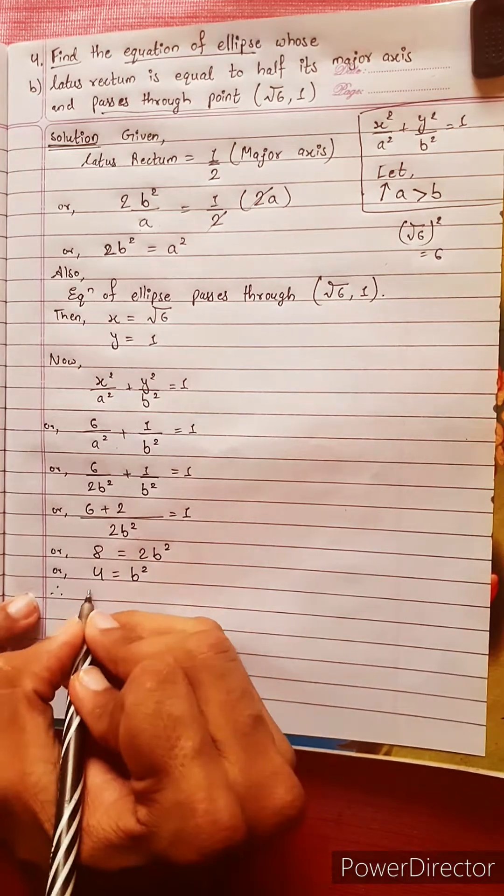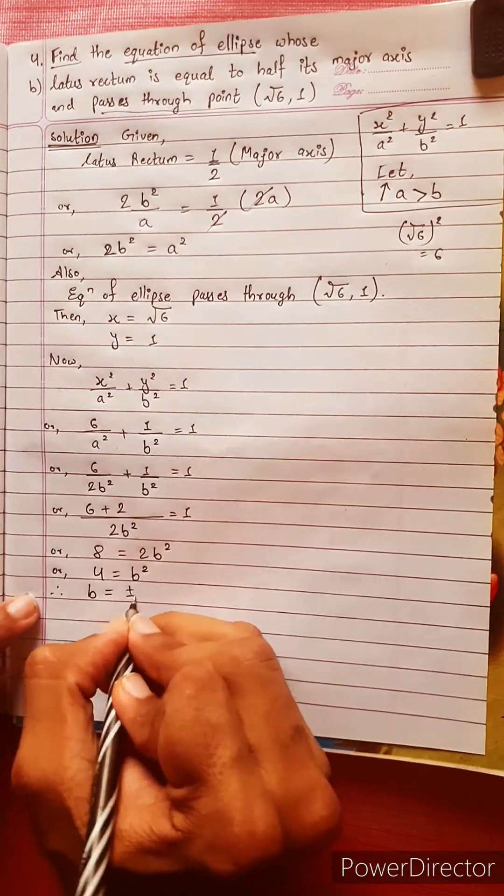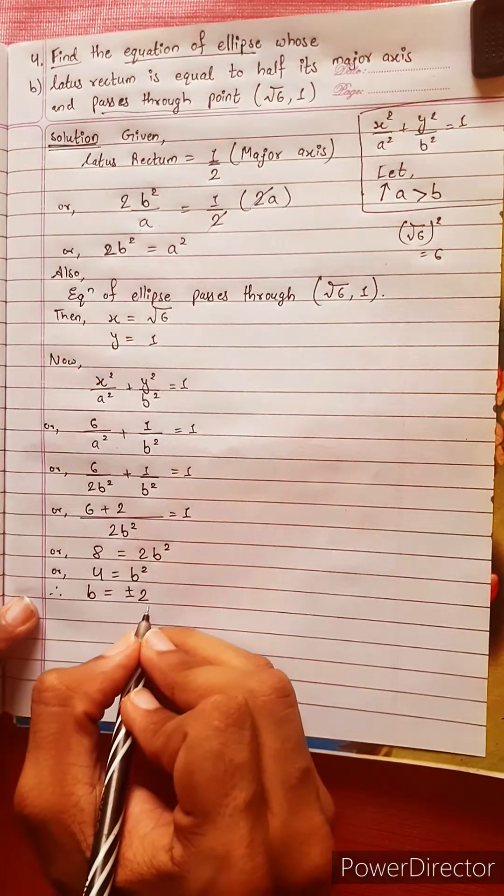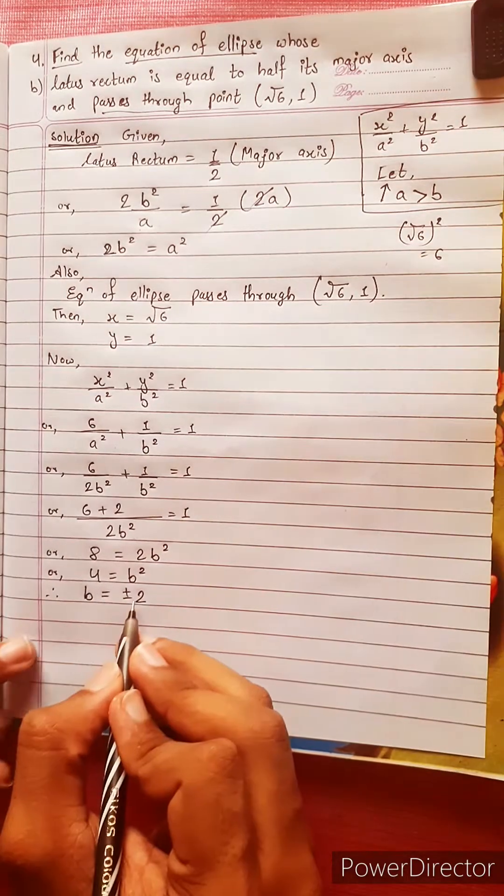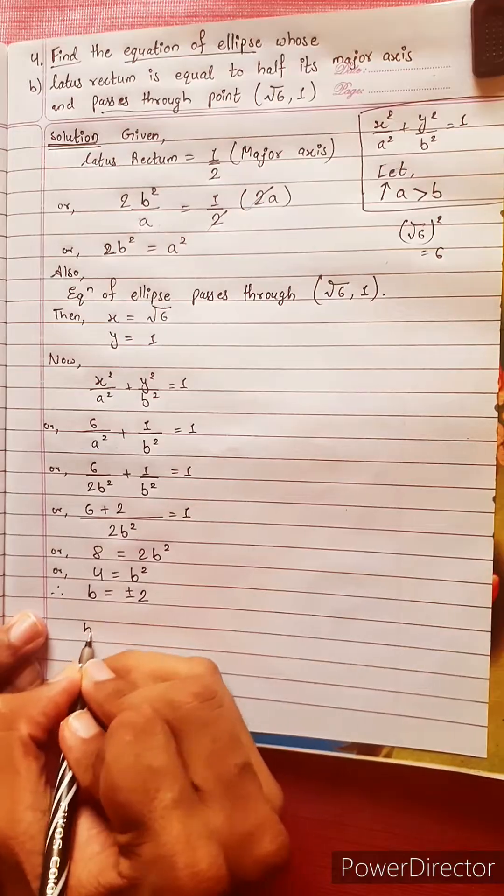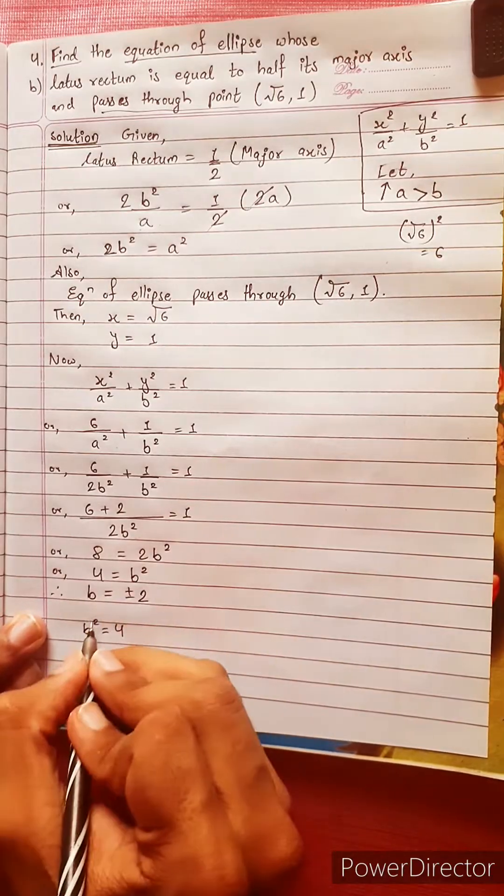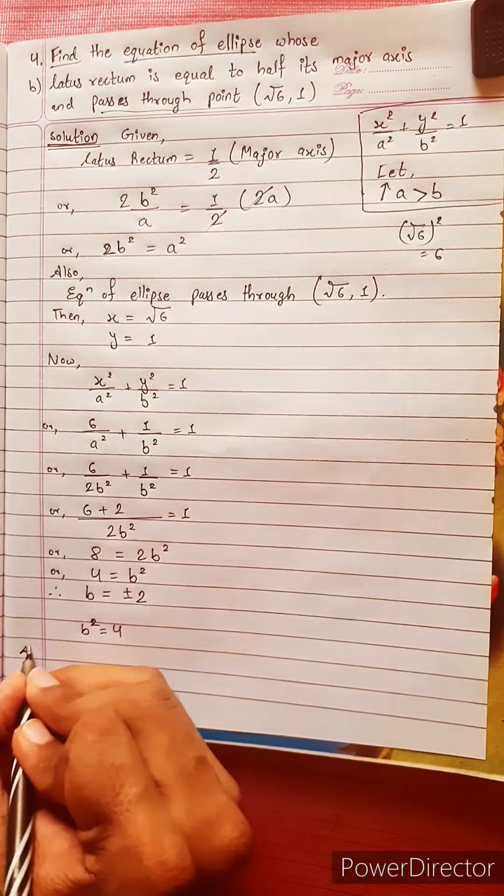Therefore, b equals to plus minus 2. But we have plus minus 2 is the same. b² equals to 4, this is the same.